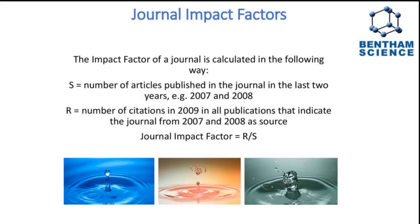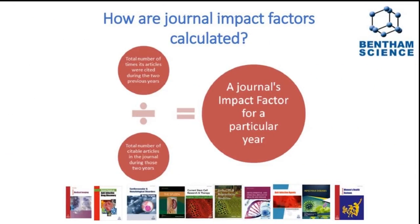This is our starting point: citation indexes and journal impact factors. It's important to recap how journal impact factors get calculated. The impact factor is the number of citations received in subsequent years that reference articles published in that journal in the last two years, divided by the number of articles published in those two years. For example, using 2007 and 2008 as the source years. This is how impact factors are calculated.